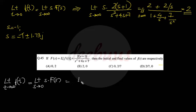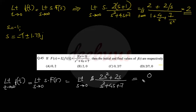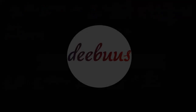Final value theorem: limit as s→0 of s·F(s) = limit of (2s² + 2s)/(s² + 4s + 7). As s→0, this gives 0/7 = 0. So the initial value is 2 and final value is 0 — answer is (b). For more GATE tutorials, please subscribe to the channel.